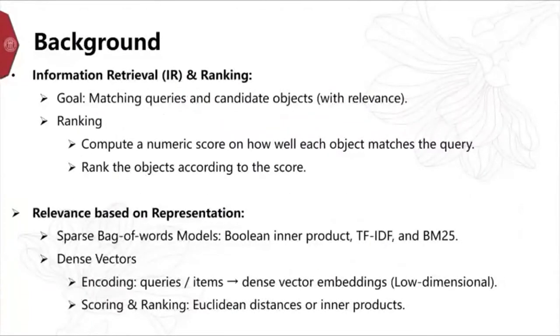First, we will start with the background of our paper, about the task of information retrieval and ranking. The goal of IR is to match queries and candidate objects with relevance. We give the matching result, that is, compute a relevant score between the queries and objects, and sort the scores to return a ranking list.